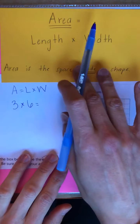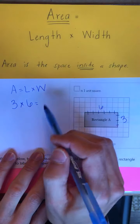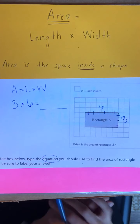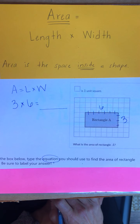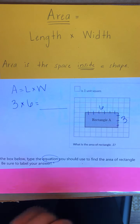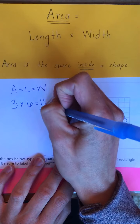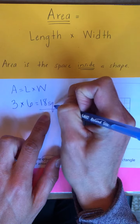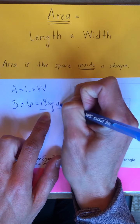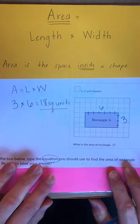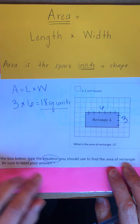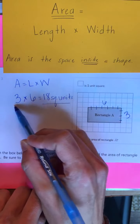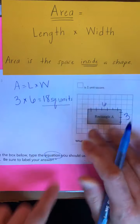Go ahead and pause the video and figure out what 3 times 6 is. When you're ready, press play. Okay friends, great job. You should have 3 times 6 equals 18. Our area is 18 — don't forget your label — square units. Excellent job. Remember, with an equation you need your answer, so you need to have 3 times 6 equals 18 square units.